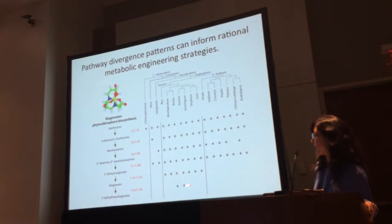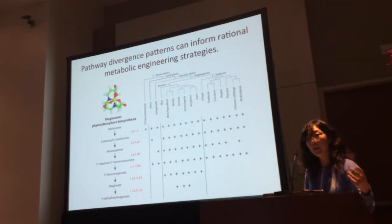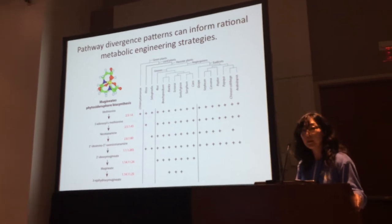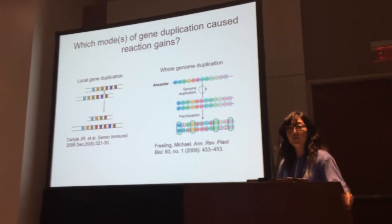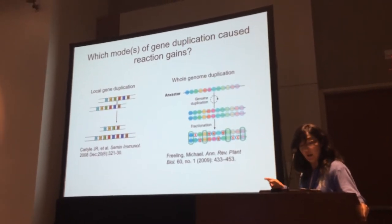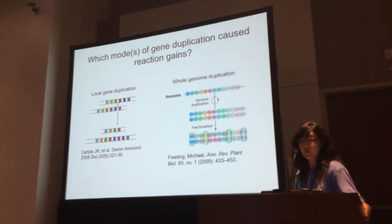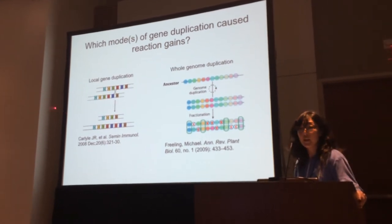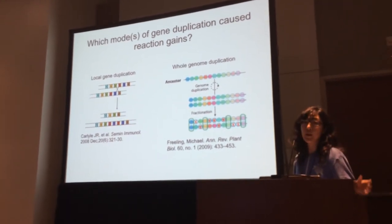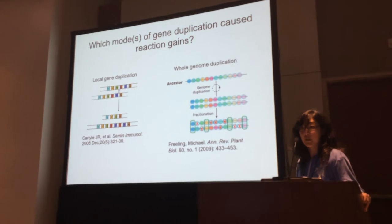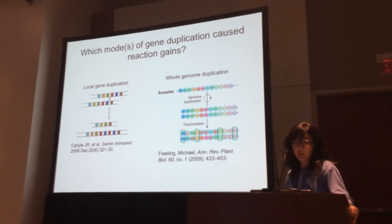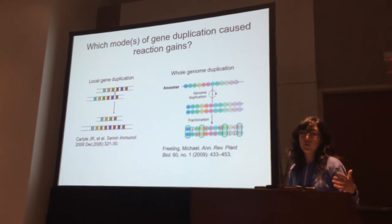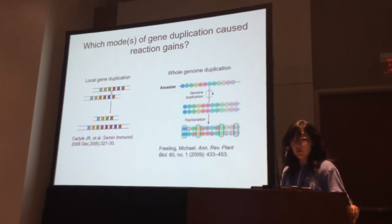Getting back to reaction gain events — what kinds of mechanisms could lead to gains of reactions? Gene functions are typically gained by gene duplications, and in plants there are two main ways of duplicating genes: local duplication, also called tandem duplication due to unequal crossing over, and whole genome duplications. We asked which types of duplications led to metabolic gene diversity.